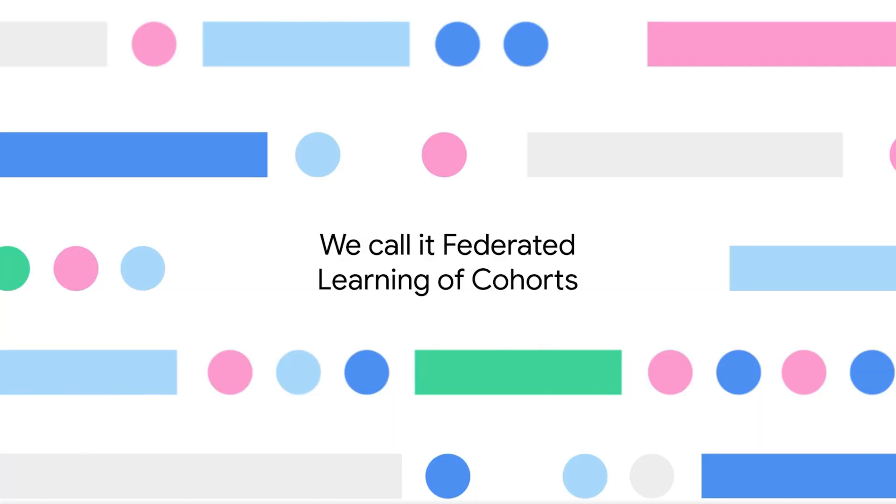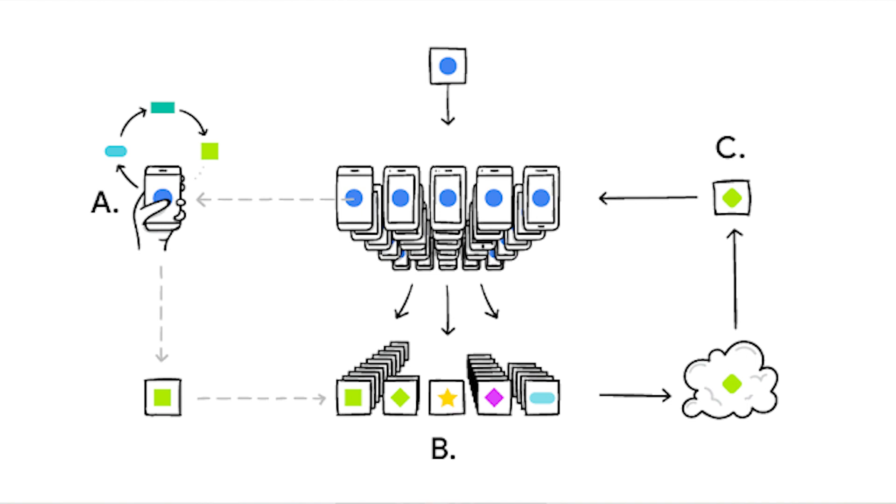After floating the idea of FLOC, Federated Learning of Cohorts, which looked a bit like this, as a solution last year, Google has now decided against that plan. Long story short, it didn't go far enough to protect user privacy. It would still have been possible to de-anonymise the data.